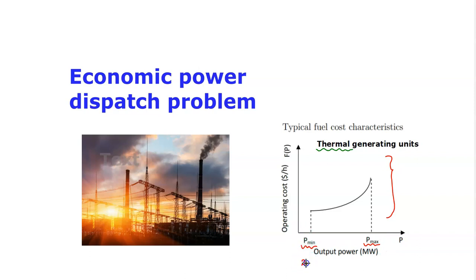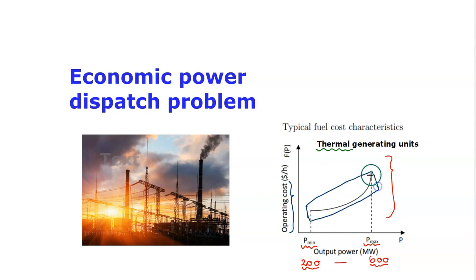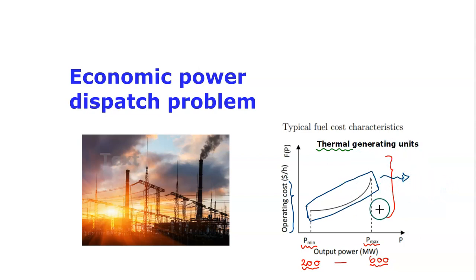For example, some generator can generate power in the range of 200 to 600 megawatt. So if this unit is in the on condition, it has to generate at least 200 megawatt and the maximum power generation is 600 megawatt. If we look at the curve of the operating cost versus power, this graphical representation is non-linear in nature.